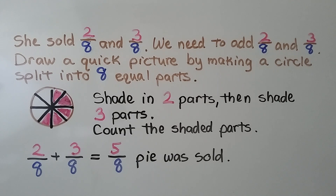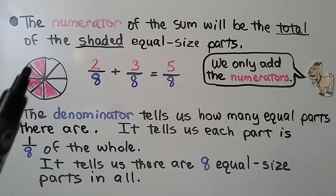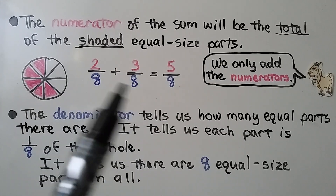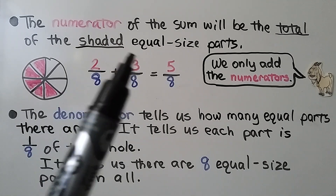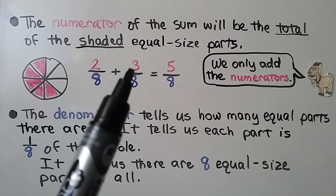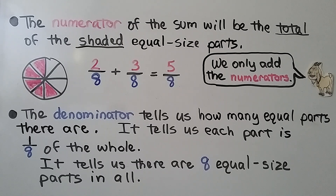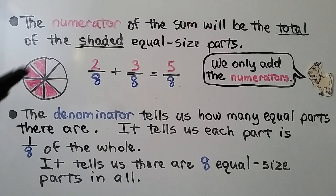We count the shaded parts: one, two, three, four, five. Two-eighths plus three-eighths equals five-eighths. Five-eighths of the pie was sold. The numerator of the sum is the total shaded parts. Since the denominators were the same, we just added the numerators: two plus three is five. The denominator tells us there are eight equal-sized parts in all, and the numerator is the number of shaded parts.